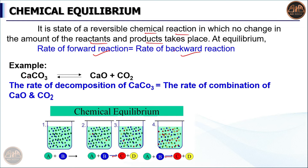For example, calcium carbonate (CaCO₃) decomposes to form calcium oxide (CaO) and carbon dioxide (CO₂). This is the forward reaction. The reverse can also form calcium carbonate again. When the rate of reaction reaches equilibrium speed, the process stops — this is chemical equilibrium.